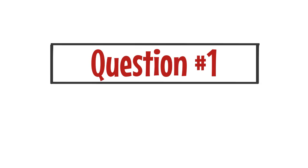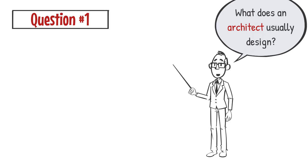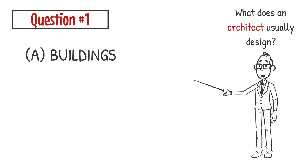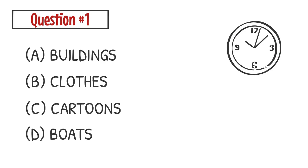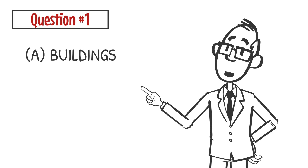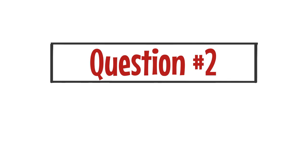Question number 1: What does an architect usually design? A. Buildings B. Clothes C. Cartoons D. Boats. The correct answer is A. Architects usually design buildings.